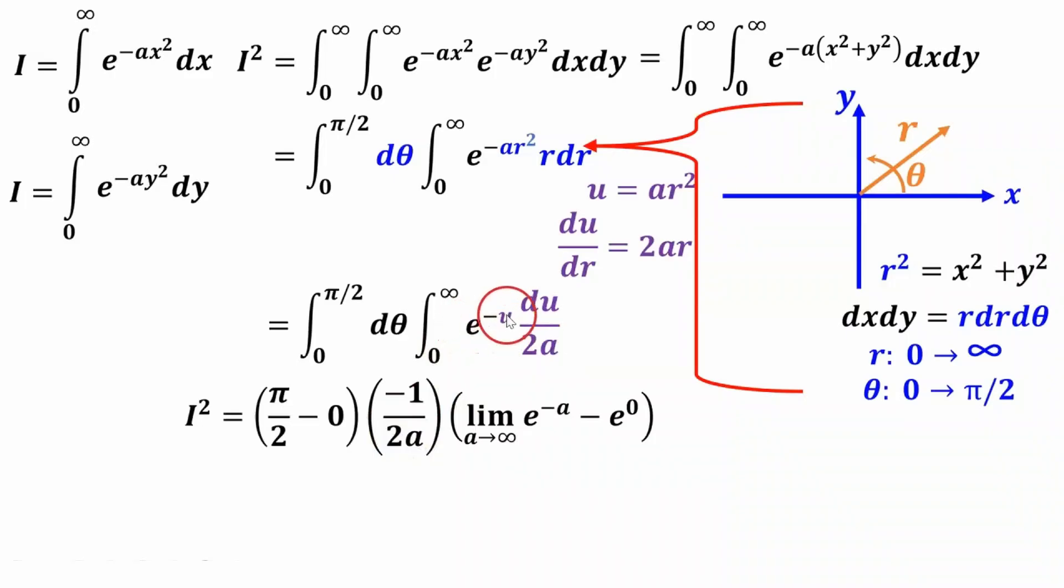The integral of e to the negative u is e to the negative u. It's itself with a negative sign. So this is the negative sign yanked out. And we're evaluating it in the limits as u goes from zero to infinity right here. We'll just set the limit up with a different variable. And this limit term becomes zero. So that's pretty sweet.